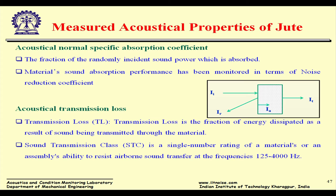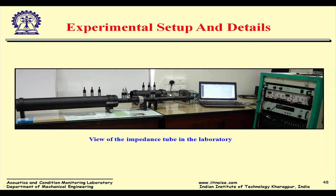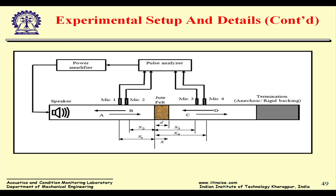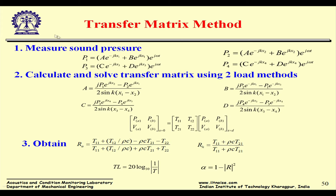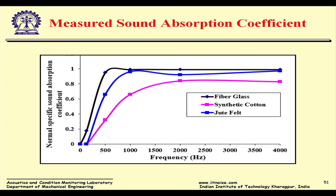Now for the acoustical properties of jute. Two properties are developed: normal specific sound absorption coefficient and transmission loss. Sound absorption performance is monitored in terms of Noise Reduction Coefficient (NRC) and Sound Transmission Class (STC) as a single number rating. The experimental setup uses a speaker, 4 microphone locations, and 2 termination conditions. Sound pressure is measured at 4 locations; using 2 load conditions, we solve a matrix to obtain both transmission loss and absorption properties.